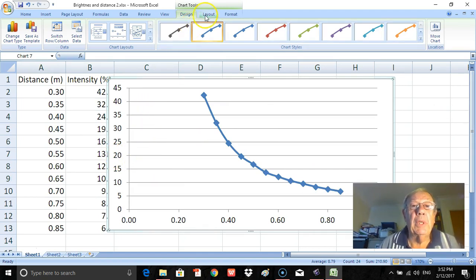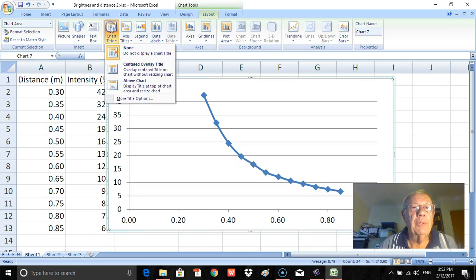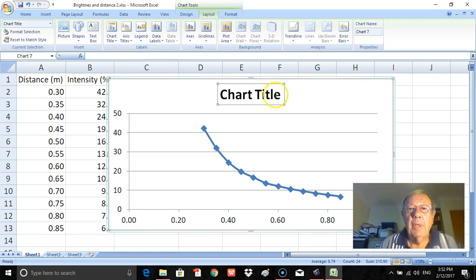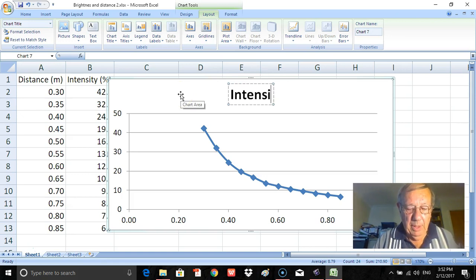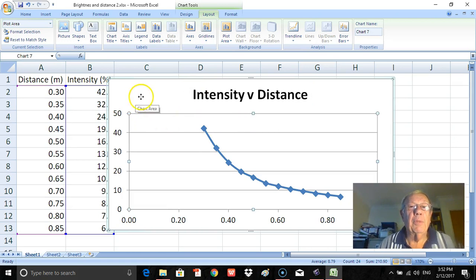And I'll also move this down so we can see it a little bit better. With any graph what I should do is put in a chart title or a graph title, so I click on here and go across here to chart titles, click on that. I'll click above the chart so I can type in here: Intensity v Distance.